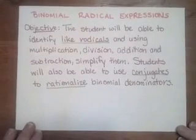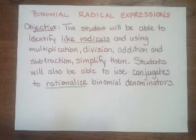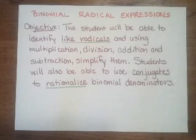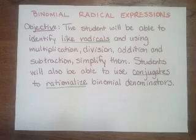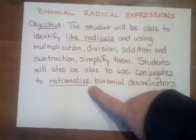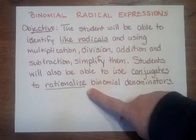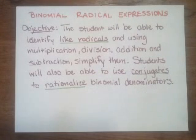Our objective in this lesson is for the student to be able to identify like radicals. You're going to be using addition, division, multiplication, and subtraction to simplify them. And we're also going to be talking about conjugates and how to rationalize binomial denominators. These are our terms: like radicals, conjugates, and rationalize. We've talked about rationalize before, but we are going to talk about it in terms of binomial denominators.